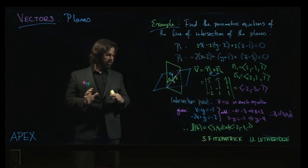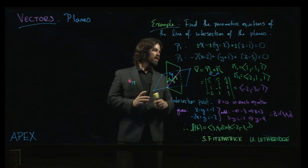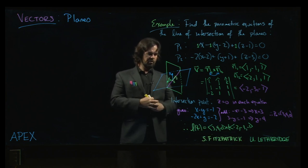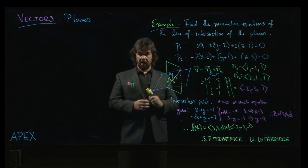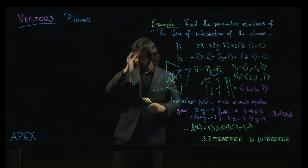We relied on essentially a geometric solution here. We wanted to find the intersection of two planes, and we relied on the observation that the line of intersection for the two planes has to be orthogonal to the two normal vectors for the planes. That the direction vector for the line is orthogonal to those two vectors, which means we can find it using a cross product.